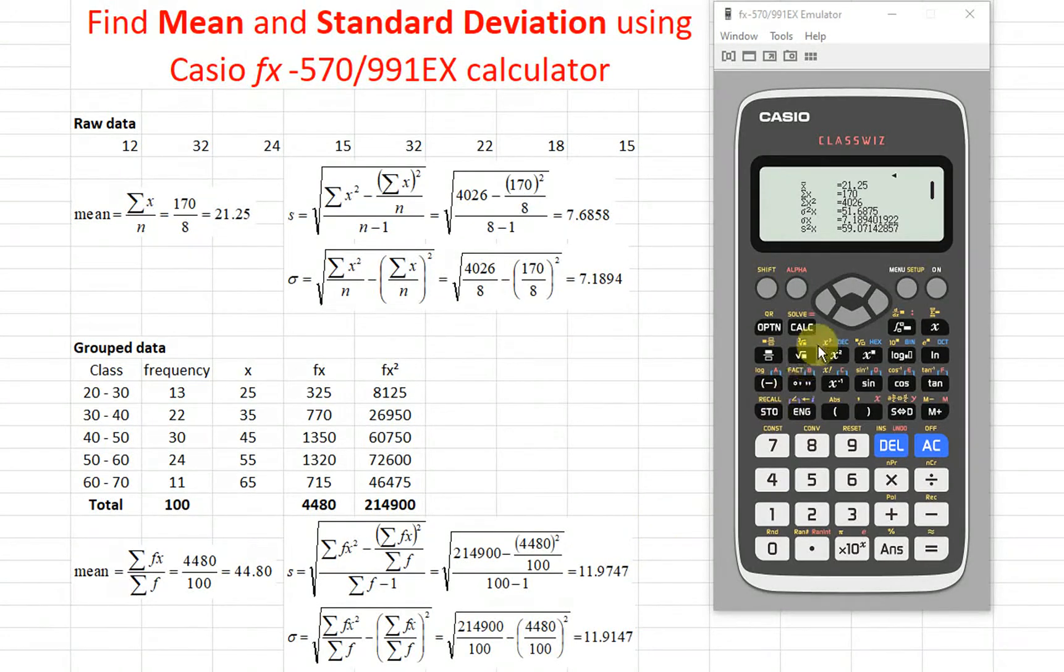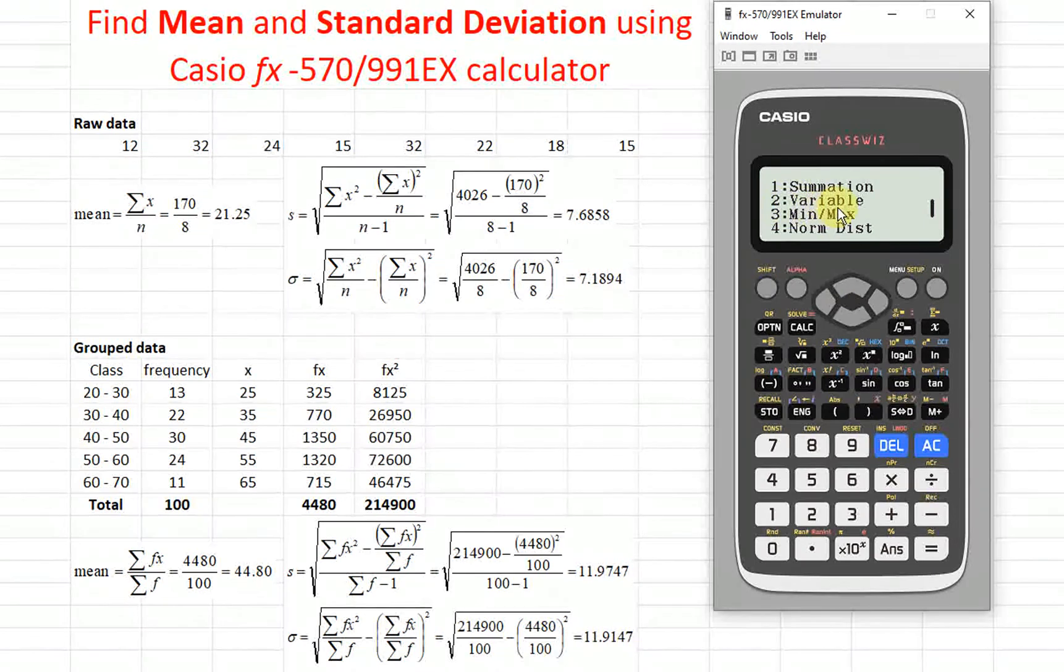How if let's say we would like to involve a certain value in calculation, means that we want to call the value. So we just have to press the back button, the arrow button, the left button. So we press, then we look for, we scroll down the down button, look for variable.